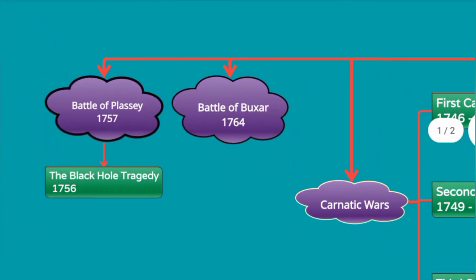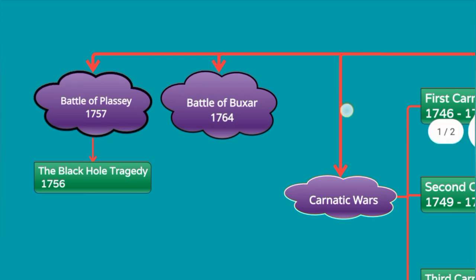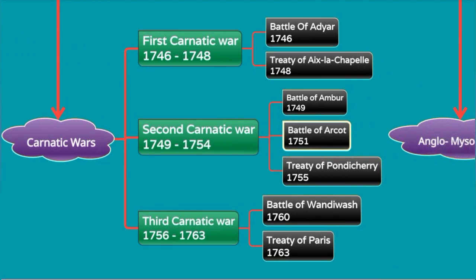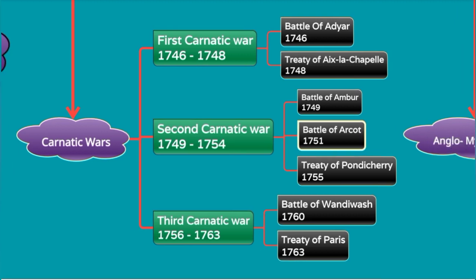To recap the mind map: Battle of Plassey, 1757. Black Hole Tragedy, 1756. Battle of Buxar, 1764. Carnatic Wars: First Carnatic War featured the Battle of Adyar 1746, ending with the Treaty of Aix-la-Chapelle 1748. Second Carnatic War 1749–54: Battle of Ambur, Battle of Arcot, Treaty of Pondicherry 1755. Third Carnatic War: Battle of Wandiwash, concluded by Treaty of Paris 1763.